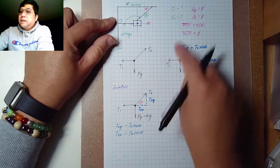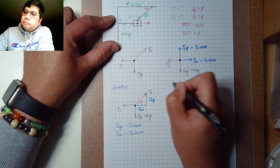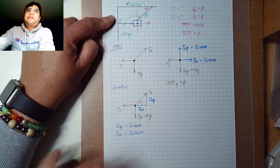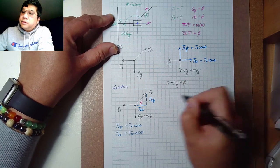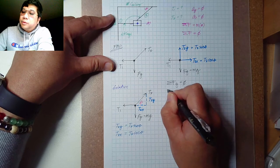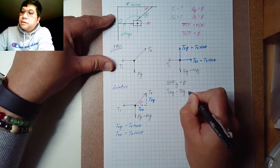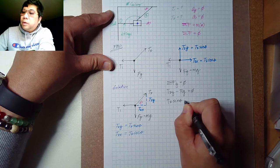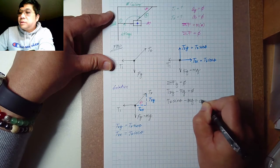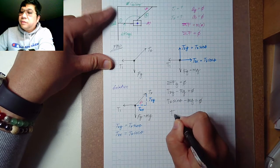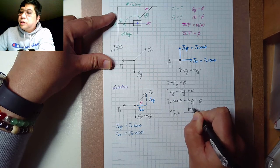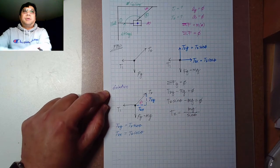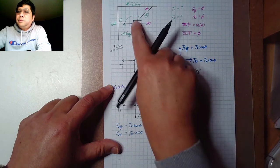First, let's analyze the y-axis. The summation of forces along the y-axis equals zero. Positive forces go upward, so T₂y is positive; the force of gravity Fg is negative going downward. So T₂ sinθ − mg = 0. Moving mg to the other side, we get T₂ = mg / sinθ. That is our answer for T₂.